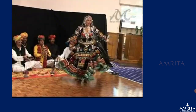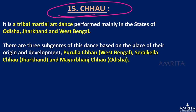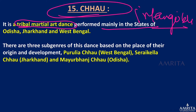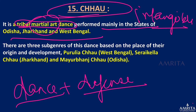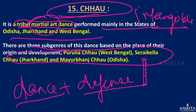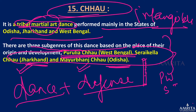Next is Chhau dance, also part of the UNESCO Intangible Cultural Heritage list. It is a tribal martial dance performed mainly in the states of Odisha, Jharkhand, and West Bengal. There are three sub-genres: Purulia Chhau in West Bengal, Seraikella Chhau in Jharkhand, and Mayurbhanj Chhau in Odisha. Masks are worn by dancers during performance except in Mayurbhanj Chhau — so Mayurbhanj has no mask.